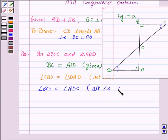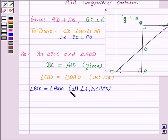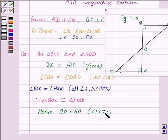And BC is parallel to AD. So we have proved that two angles and one included side of the two triangles are equal. Therefore, triangle BOC is congruent to triangle AOD. Hence BO is equal to AO by CPCT, that is the corresponding parts of congruent triangles are congruent.